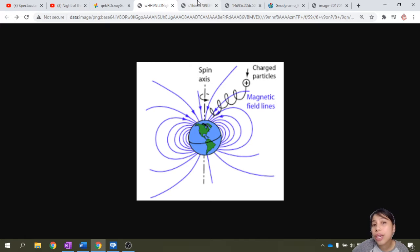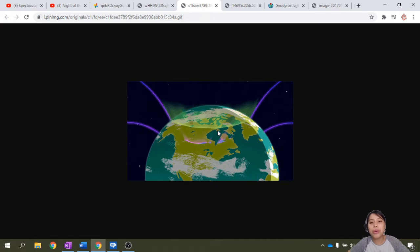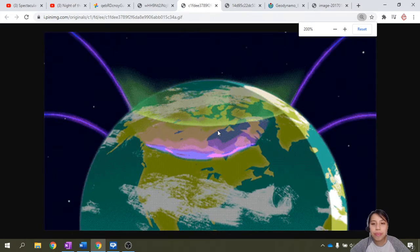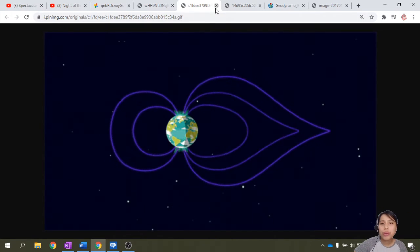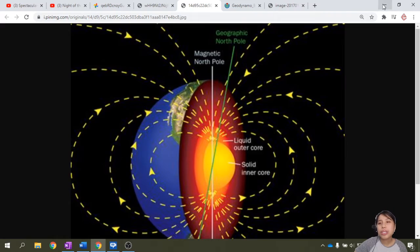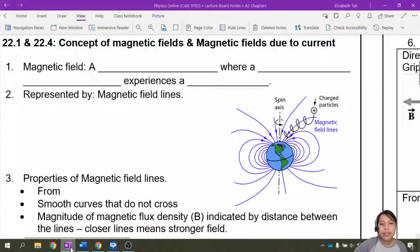then you will generate what we call the Aurora Borealis that we see. So particles follow the magnetic fields and you see all these beautiful lights. So this is what we're going to learn today: magnetic fields.